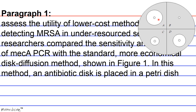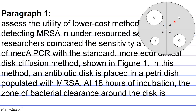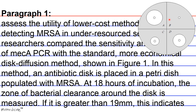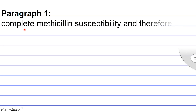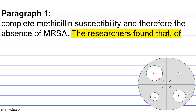To assess the utility of lower-cost methods of rapidly detecting MRSA in under-resourced settings, researchers compare the sensitivity and specificity of mecA PCR with the standard, more economical disc diffusion method, as shown in figure one. In this method, an antibiotic disc is placed in a petri dish populated with MRSA. At 18 hours of incubation, the zone of bacterial clearance around the disc is measured. If it is greater than 19 millimeters, this indicates complete methicillin-susceptibility, and therefore the absence of MRSA.